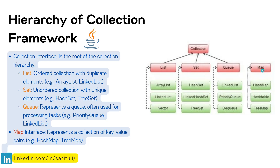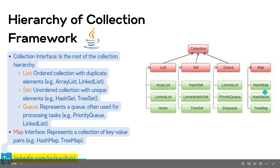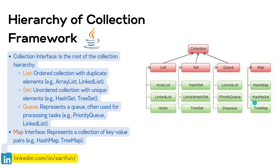Last but not least is the Map interface. As I said, it's a separate interface — it doesn't inherit from the Collection interface, but it comes as a bundle with the Java Collection Framework. It represents a collection of key-value pairs, and the implementing classes are HashMap, Hashtable, and TreeMap.